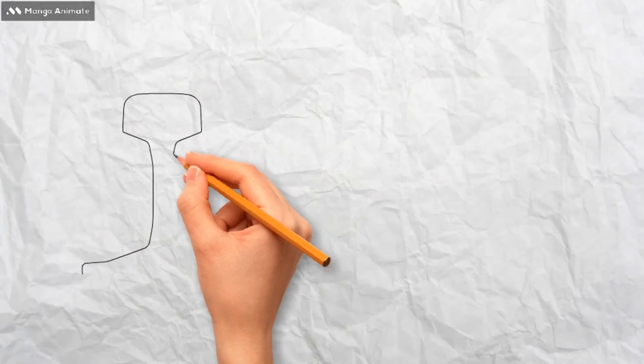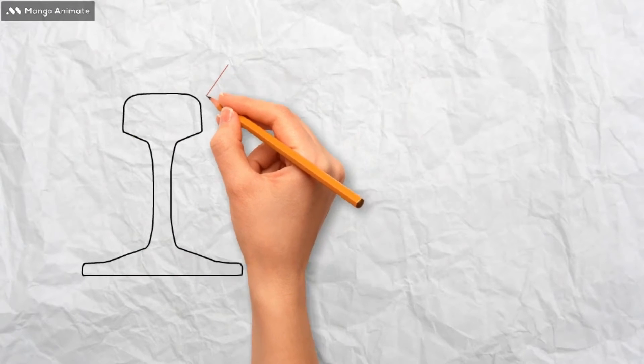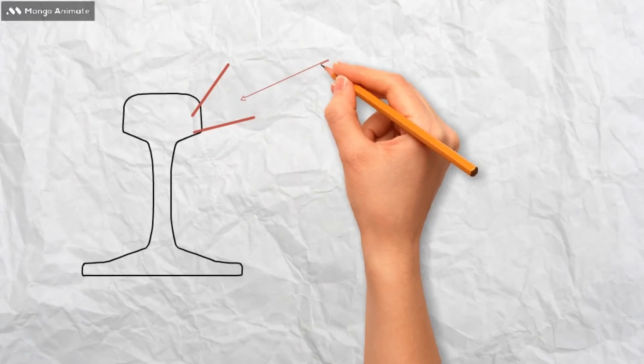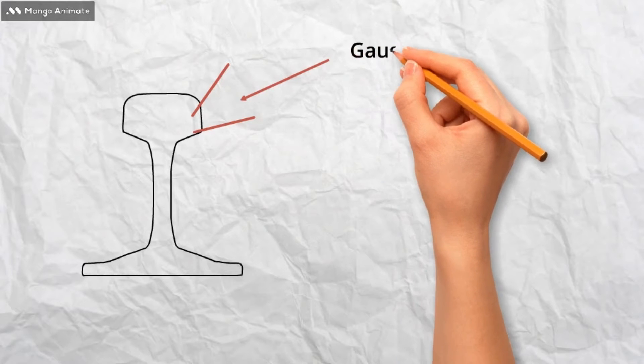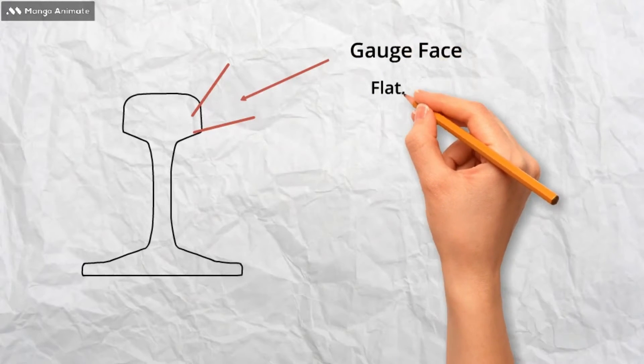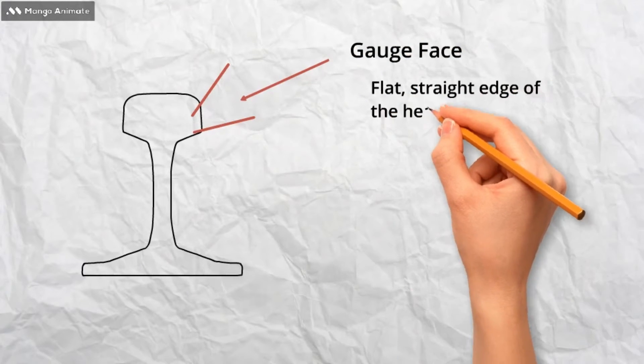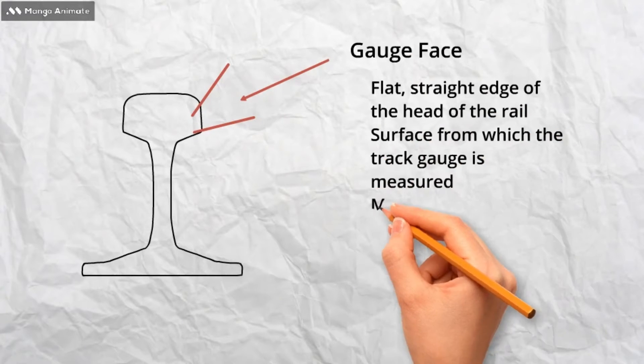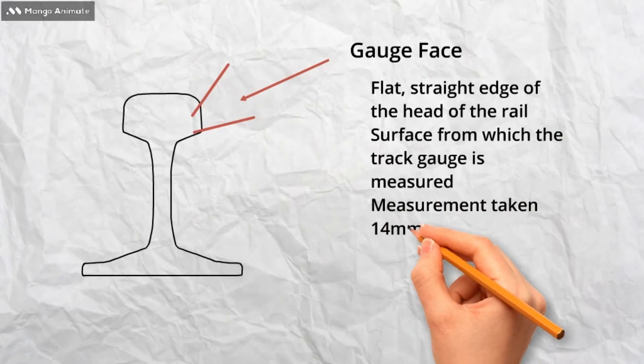Back to our rail. Next up is the gauge face. This is simply the flat straight edge of the head of the rail. This flat surface is where the track gauge, the distance between the rails, is measured. 14mm below the crown of the rail to be precise.